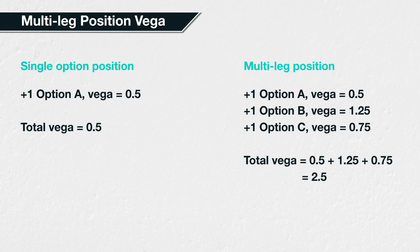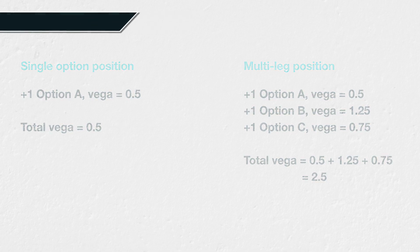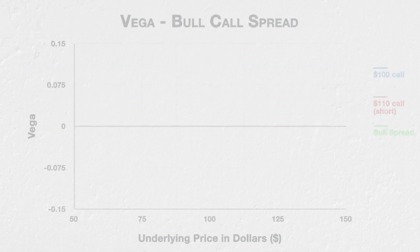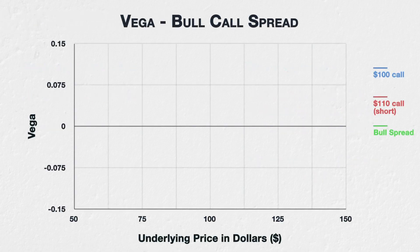As with the other Greeks we have discussed so far in this course, it is possible to sum the vega of each individual option in the portfolio to get the total vega. Let's look at a simple multi-leg option position: a bull call spread. This position consists of purchasing one call option, then selling another call option with a higher strike price, but both with the same expiration date.